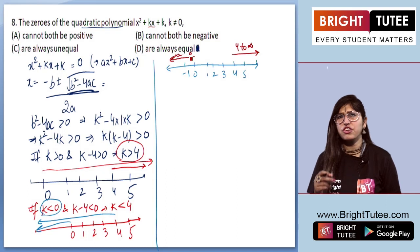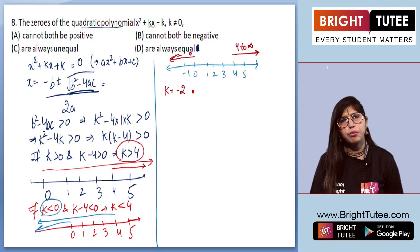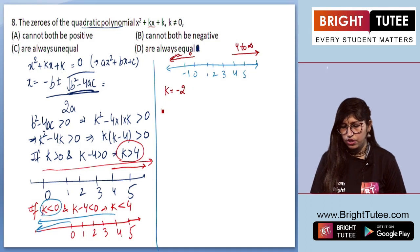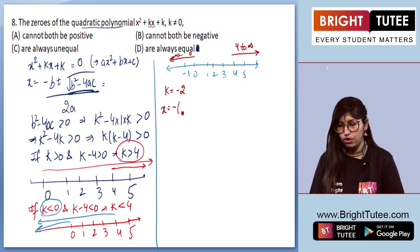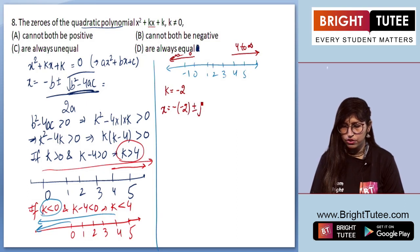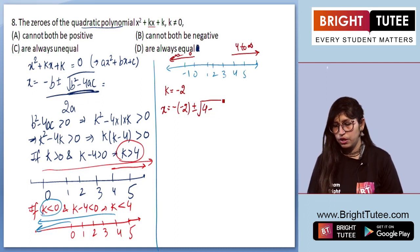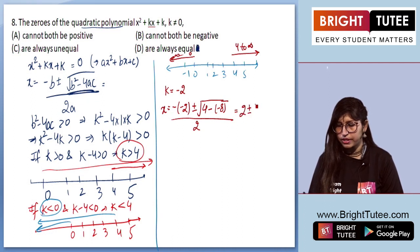Let's take k = −2 as an example. Using the quadratic formula: x = [−(−2) ± √((−2)² − 4(1)(−2))] / 2 = [2 ± √(4 + 8)] / 2 = [2 ± √12] / 2.